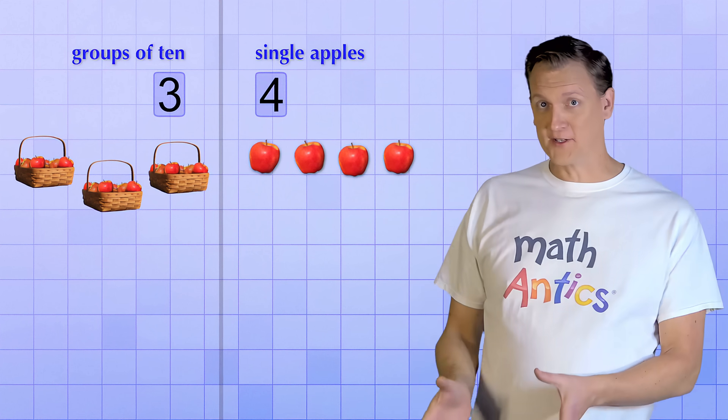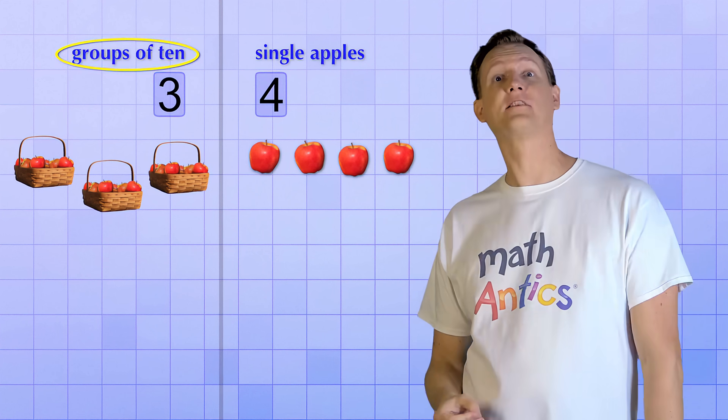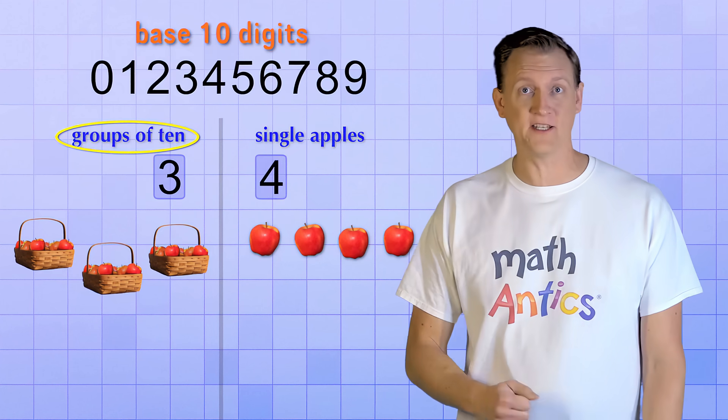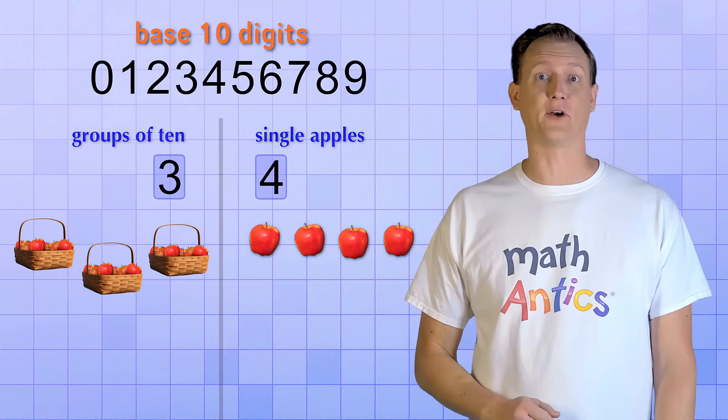Do you see what's happening? Because the new number place is being used to count groups of 10, it's allowing us to re-use our original 10 digits. But this time, they're able to count bigger amounts.